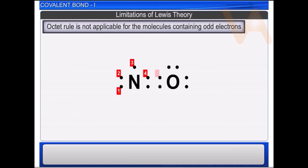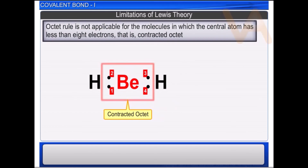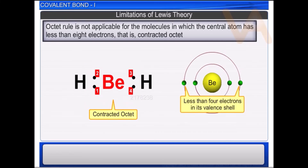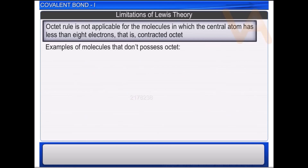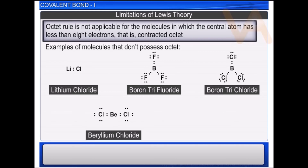For example, there are only seven electrons around nitrogen in nitric oxide. The octet rule is not applicable for molecules in which the central atom has less than eight electrons — that is, contracted octet. This is observed in compounds where the central atom in its elemental state possesses less than four electrons in its valence shell, such as lithium in lithium chloride, boron in boron trifluoride and boron trichloride, beryllium in beryllium chloride, and aluminium in aluminium chloride — none of which possess octet.